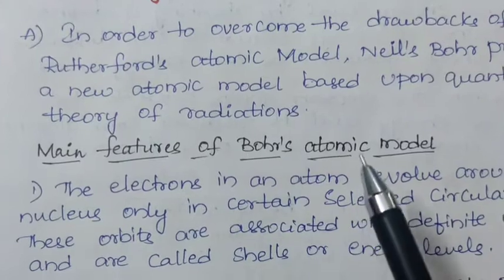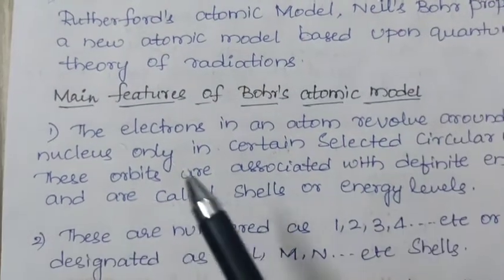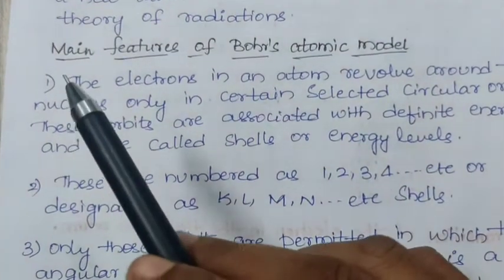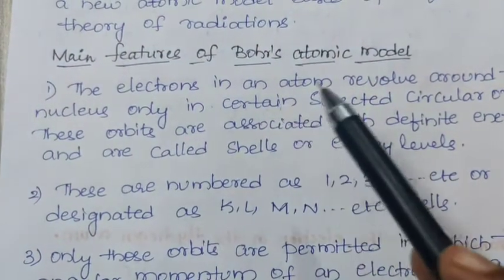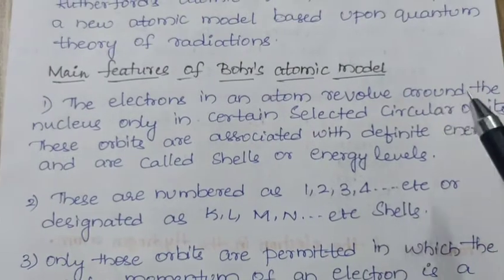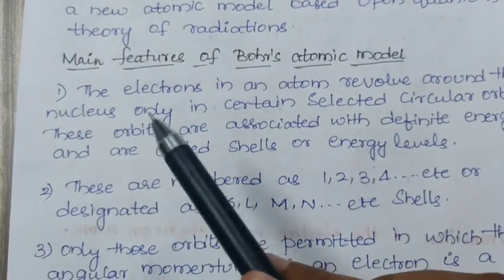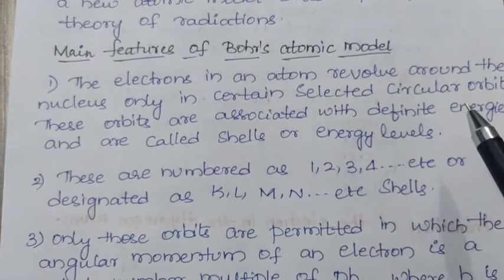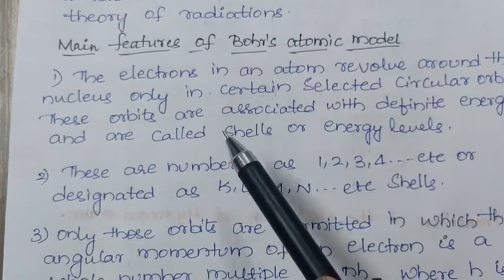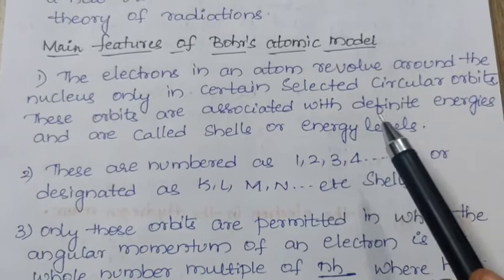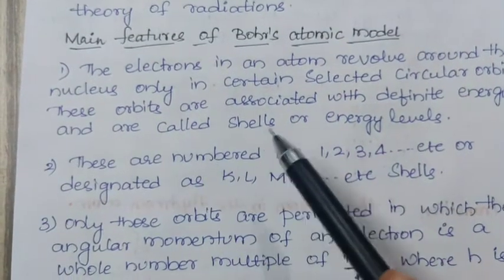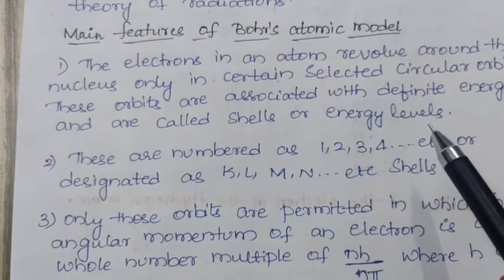Main features of Bohr's atomic model are, you have to write in a point wise like this. The electrons in an atom revolve around the nucleus only in certain selected circular orbits.